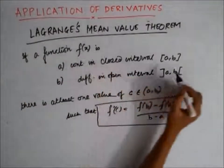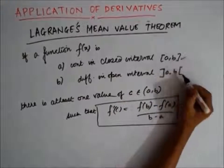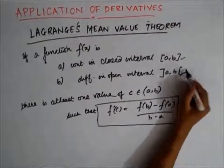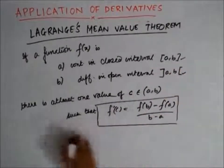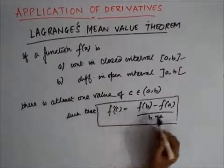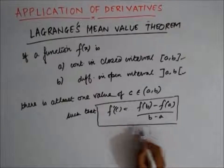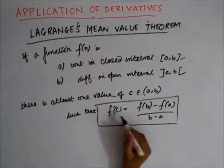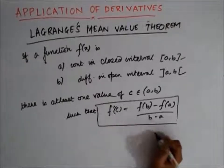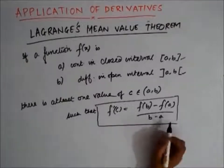So this is what Lagrange's Mean Value Theorem states. It states that if a function f(x) is continuous and differentiable in the interval [a, b], then there is at least one value of c lying in (a, b) such that f'(c) is equal to [f(b) minus f(a)] divided by (b minus a).